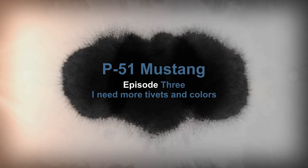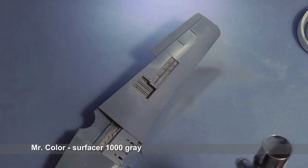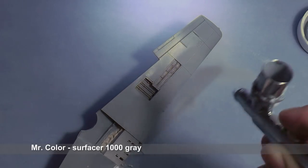Hello fellow modelers. Here is the third part of a P-51 video series. Today it will be about riveting and painting. I cover the plane surface with Mr. Color Surfacer 1000. It also works as a primer.